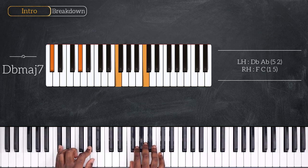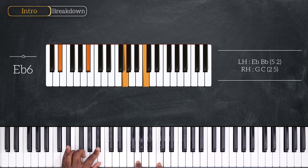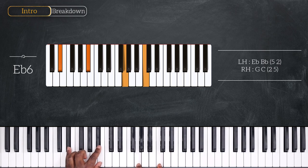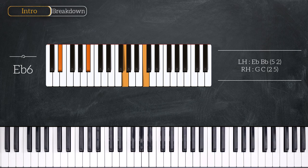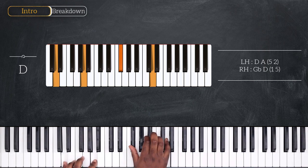And then move up by one whole step to play Eb 6. Eb, Bb, G and C. Okay, then we're going to play the same movement starting from a D major chord with D and A, Gb and D.